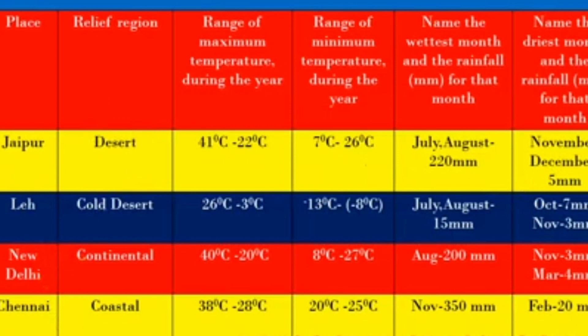For Leh: the relief region is cold desert. The maximum temperature ranges from 26 degrees Celsius to 3 degrees Celsius. The minimum temperature ranges from minus 13 degrees Celsius to 8 degrees Celsius. The wettest months are July and August with 15 mm rainfall. The driest months are October with 7 mm and November with 3 mm.